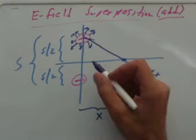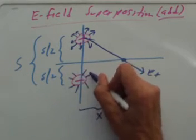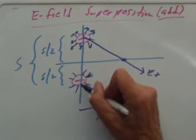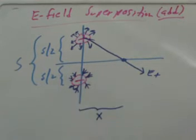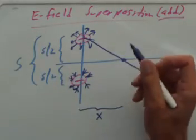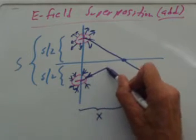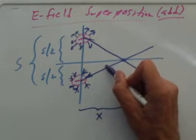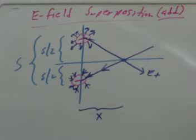The same thing for the negative charge — we can draw all those electric field lines pointing inwards, because negatives are sinks of electric field. All these lines go in, filling the entire space around the charge. Once again, one of them goes right through this point. So this is the setup: at my point of interest, there are electric field contributions from both charges.